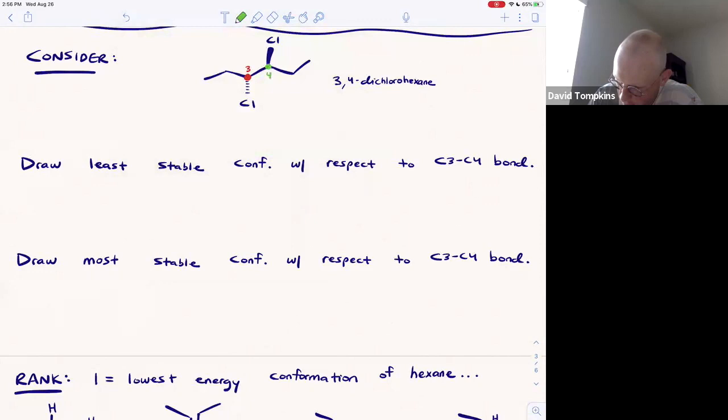First I will draw in the implicit hydrogens. Carbon-3 already has two planar lines and one dash, so the hydrogen will be a wedge coming out of the page. Carbon-4 already has a wedge and two lines bound to it, so the hydrogen there will be a dash into the page.